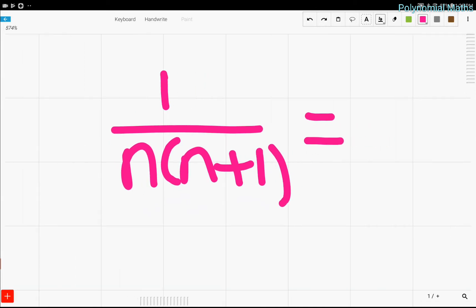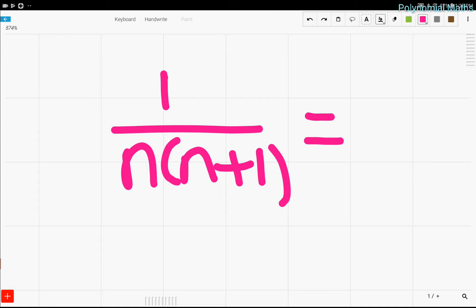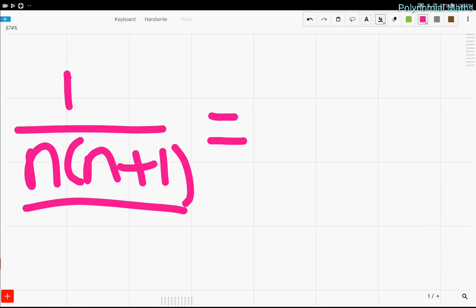So, we have a fraction right here, and we want to split it up. We see that we have this ugly part right here, n times n plus 1, and we want to write it in a nicer way.